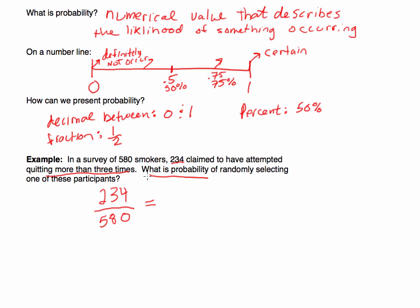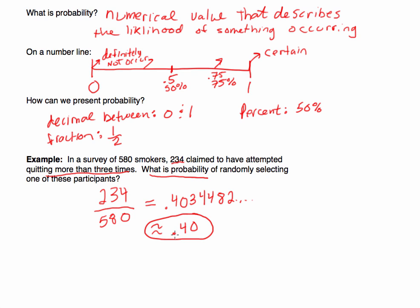If I put this in the calculator — 234 divided by 580 — you get approximately 0.4034, so we'll say it's approximately 0.40. The probability of randomly selecting an individual who attempted to quit smoking more than three times is approximately 0.40. If I asked what percent chance this is, you would just change it to approximately 40%.